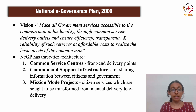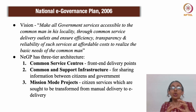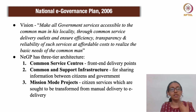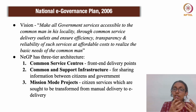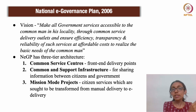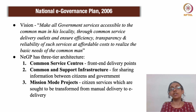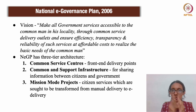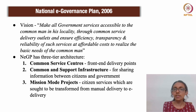Its vision statement makes it clear that it wants government services to be accessible to the common man through common service delivery outlets, which it claims will bring about more transparency, efficiency, and reliability at affordable costs. These common service delivery outlets are found in a three-tier architecture. At one end, we have the common service centers — these are the outlets through which e-governance services are made available to citizens. There will be many common service centers in your locality.